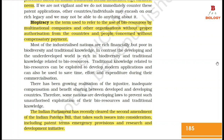Most of the industrialized nations are rich financially but poor in biodiversity and traditional knowledge. In contrast, the developing and underdeveloped world is rich in biodiversity and traditional knowledge related to bioresources. Traditional knowledge related to bioresources can be exploited to develop modern applications and can also be used to save time, effort and expenditure during commercialization. There has been growing realization of the injustice and inadequate compensation between developed and developing countries. Therefore, some nations are developing laws to prevent unauthorized exploitation of their bioresources. The Indian Parliament has recently cleared the second amendment of the Indian Patent Bill, including Patent Terms Emergency Provisions and Research and Development Initiative.